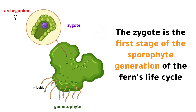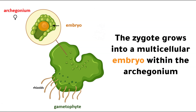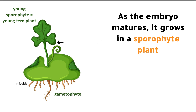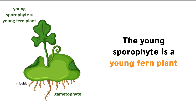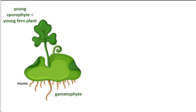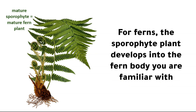The zygote is the first stage of the sporophyte generation of the fern's life cycle. The zygote grows into a multicellular embryo within the archegonium. As the embryo matures, it grows into a sporophyte plant. The sporophyte is attached to and dependent upon the gametophyte plant. The young sporophyte is a young fern plant. Eventually the prothalus withers and dies and the sporophyte develops into an independent plant, developing into the fern body you are familiar with.